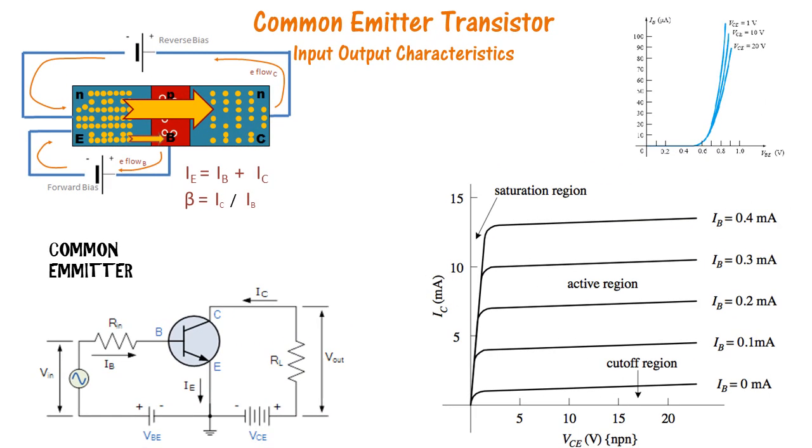For output characteristics, we will look at current in the collector circuit versus the reverse bias. Here we see that this graph can be broadly divided into three regions: the active region, which is commonly used for amplification; the cutoff region; and the saturation region. We will discuss these three regions shortly.